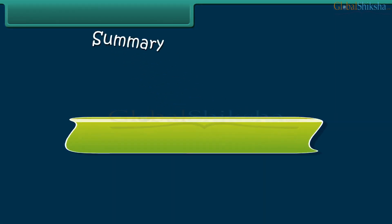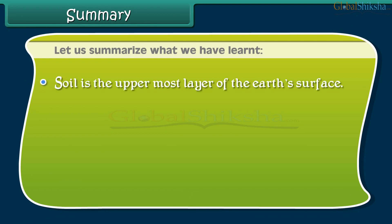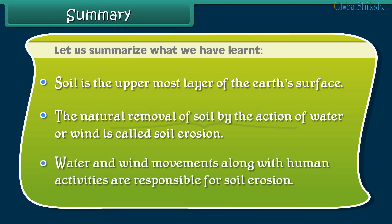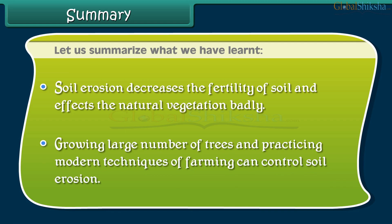Summary: Let us summarize what we have learned. Soil is the uppermost layer of the earth's surface. The natural removal of soil by the action of water or wind is called soil erosion. Water and wind movements, along with human activities, are responsible for soil erosion. Soil erosion decreases the fertility of soil and affects natural vegetation badly. Growing a large number of trees and practicing modern techniques of farming can control soil erosion.